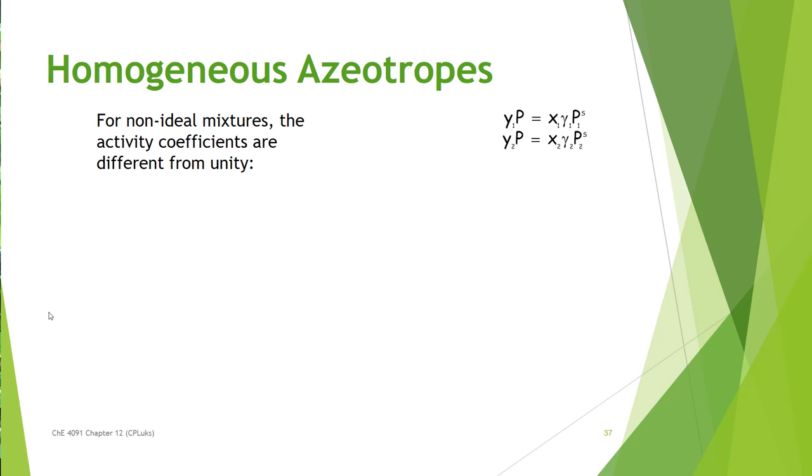But if you have a homogeneous azeotrope, so there's a homogeneous and a heterogeneous azeotrope. What most people think of as an azeotrope is the homogeneous azeotrope. And in this case, although we can still say that the fugacity coefficient for the vapor is 1, the activity coefficient for the liquid will not be 1. And so, we end up with a more complex expression, as shown here.